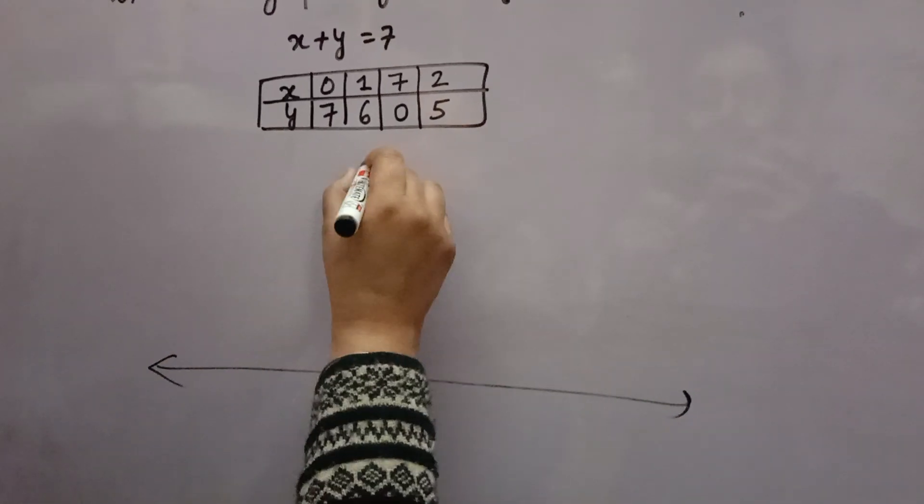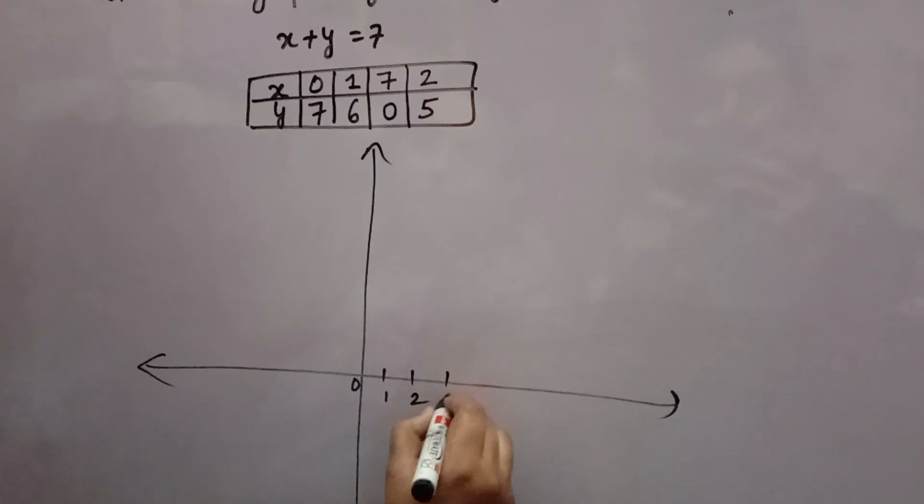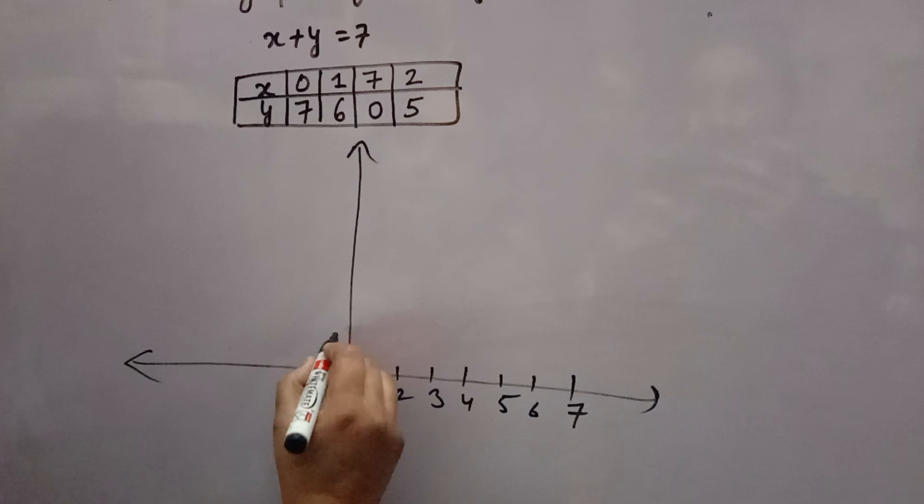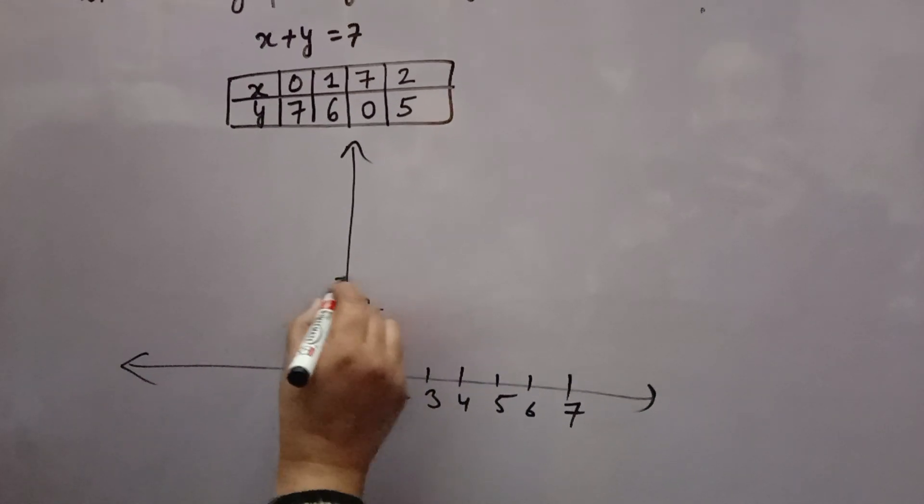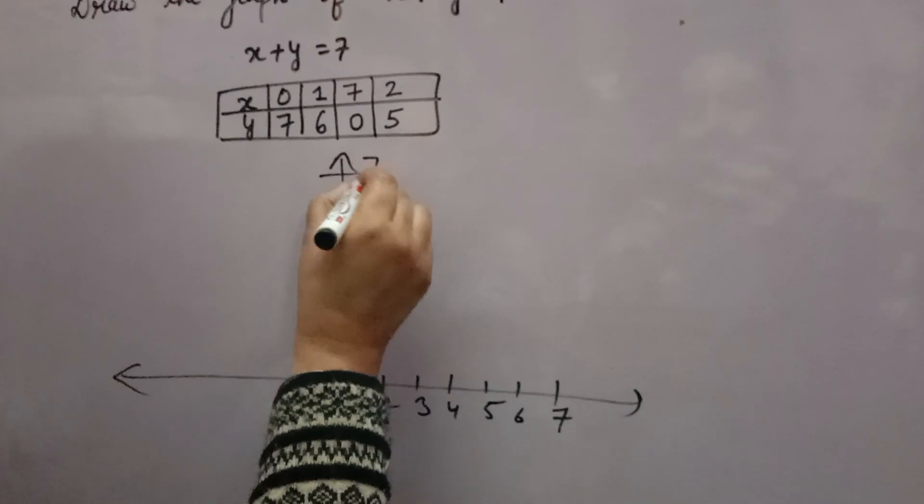Now you plot the graph. Here the x-axis is marked 0, 1, 2, 3, 4, 5, 6, 7. On graph paper you have to mark 1, 2, 3, 4, 5, 6, 7.